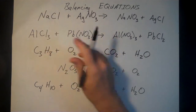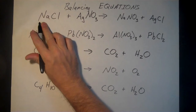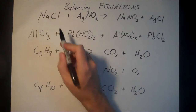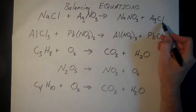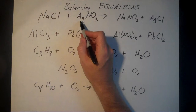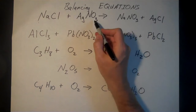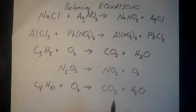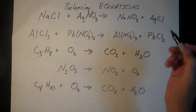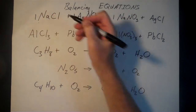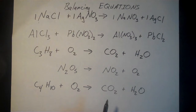This first reaction is already balanced. We've got one sodium on the reactant side, one sodium on the product side. There's one chlorine here — no subscript, so that tells us there's one. There's one chlorine on the product side. One silver, one silver on the product side. One nitrogen, one nitrogen, three oxygens, three oxygens. So that equation was already balanced — we didn't need any coefficients. If you were to write them, they'd just be ones, but usually we leave it blank if there's only one of an atom.